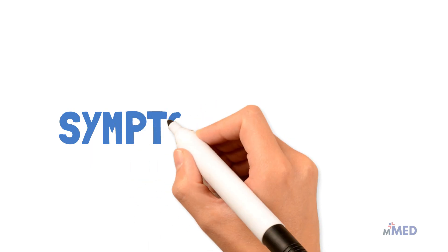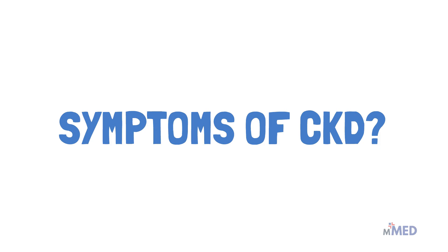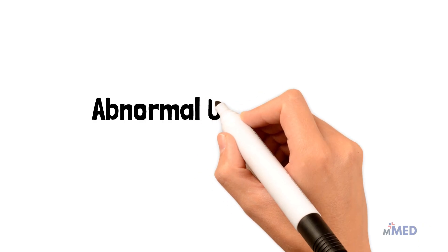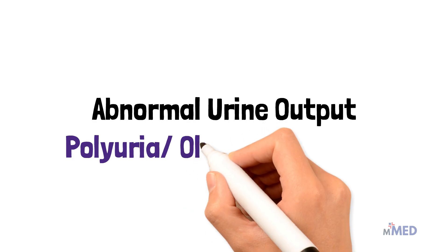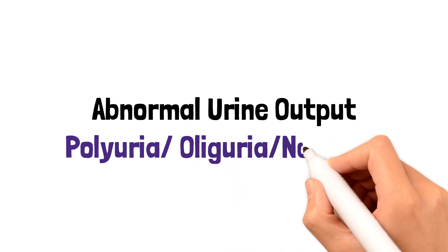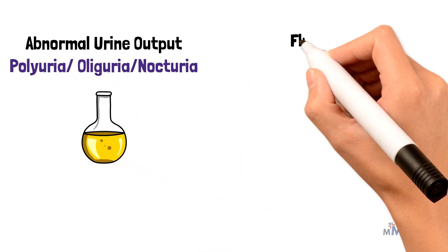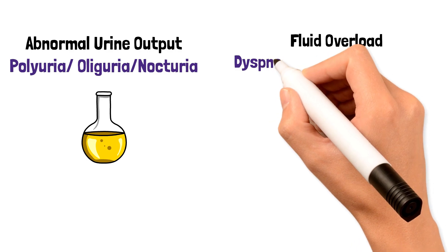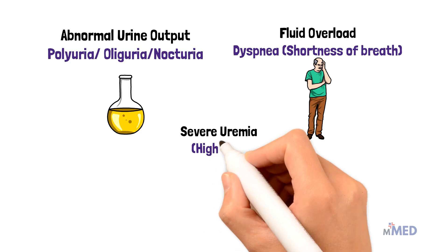What are the symptoms of CKD? CKD is usually detected by the presence of high blood pressure, proteinuria or hematuria, or a reduction in GFR with increased serum creatinine. In advanced CKD, typical symptoms may include abnormal urine output such as polyuria, oliguria, or nocturia — meaning increased or decreased urine output or constant urination at night — as well as fluid overload presenting as dyspnea or shortness of breath, and severe uremia, which is an increase in blood urea nitrogen levels.